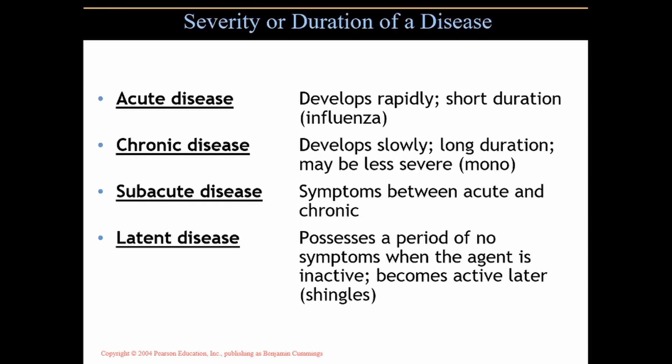Acute diseases develop rapidly and are of short duration — influenza is an acute disease that comes on very rapidly. Chronic diseases develop slowly, are of long duration, and may be less severe but can also be severe. Subacute is not a commonly used term; it refers to symptoms between acute and chronic, and there aren't many diseases that fall into that category.